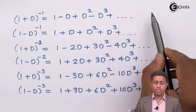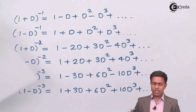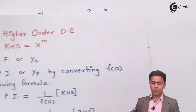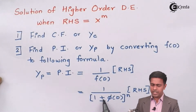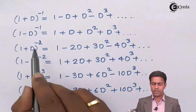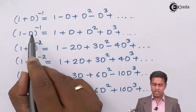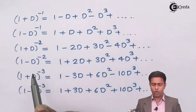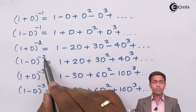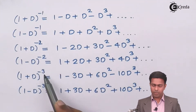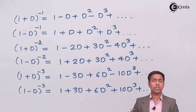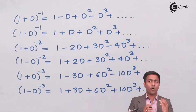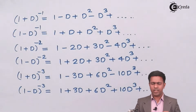Case number two: if we get a negative sign, it becomes (1 − φ(D)) raised to minus 1, which converts into the corresponding form. Similarly we get the remaining forms when the power becomes 2 or 3. These are the six formulas, and you should already know them from lower standards.